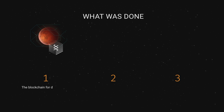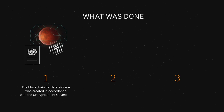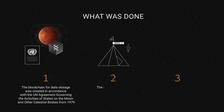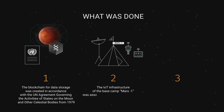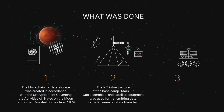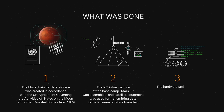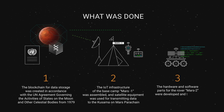The blockchain for data storage was created in accordance with the UN agreement governing the activities of states on the moon and other celestial bodies from 1979. The IoT infrastructure of the base camp Mars 1 was assembled and satellite equipment was used for transmitting data to the Kusama on Mars parachain. The hardware and software parts for the rover Mars 2 were developed and the rover was connected to the Kusama on Mars parachain.